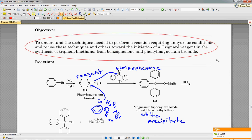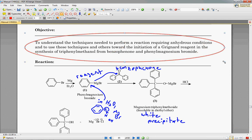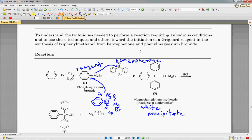So the objective is to understand the techniques needed to perform a reaction requiring anhydrous conditions, and to use these techniques and others towards the initiation of a Grignard reagent in the synthesis of triphenyl methanol from benzophenone and phenylmagnesium bromide.